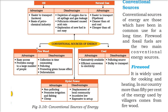Coal's advantage is that it is extensively available and allows efficient conversion to electricity. Its disadvantage is that it is a polluting source and quite bulky to transport. Hydro power is non-polluting, promotes irrigation and fishing, and is quite cheap. But when a hydro power project is installed, the local community is displaced, it inundates low-lying areas, and it is expensive to set up initially.